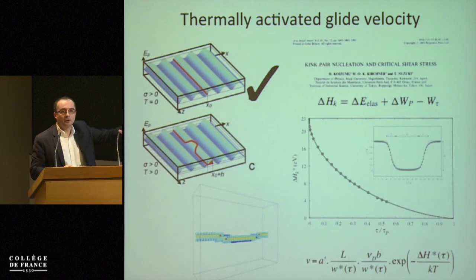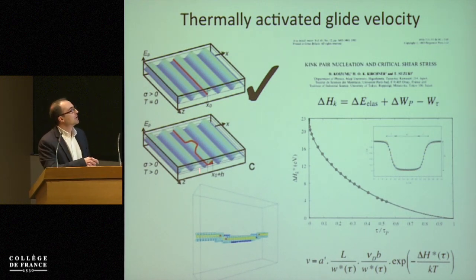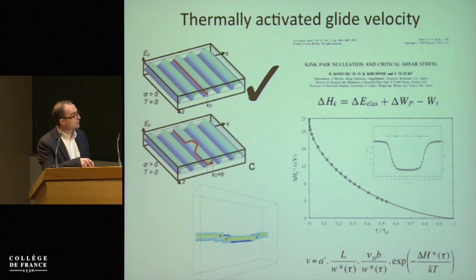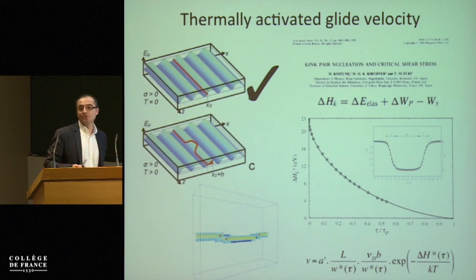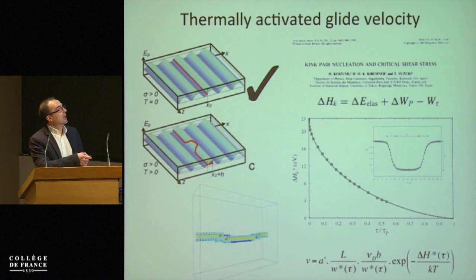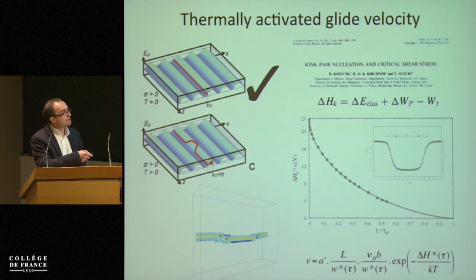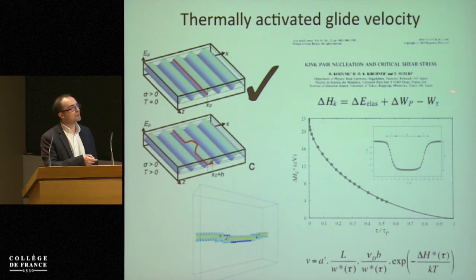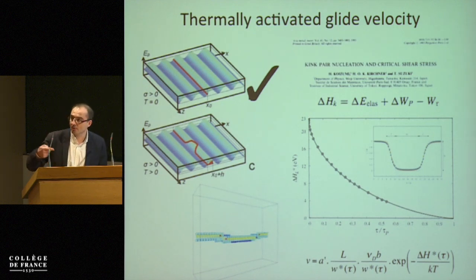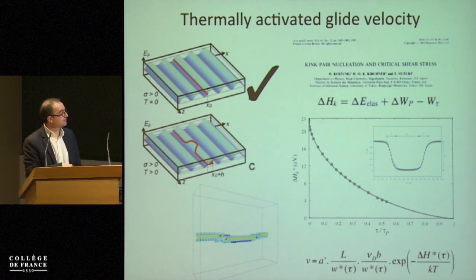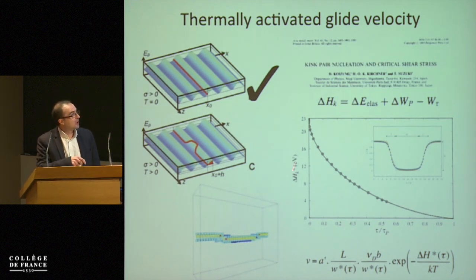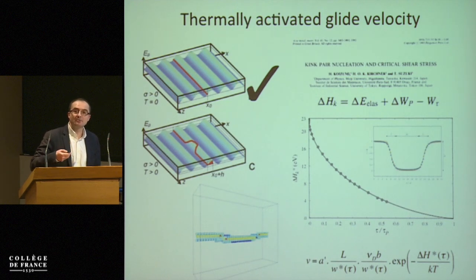This situation can be exactly computed. These two pieces of dislocation — the kink pair — cost extra energy, and you can compute this extra energy. As an example in wadsleyite, you can also compute how this amount of energy evolves as a function of applied stress, because the work of stress helps promote this process. The kink-pair energy as a function of stress is very useful because it expresses the velocity of the dislocation — the dislocation glide velocity comes from the probability of kink-pair nucleation.